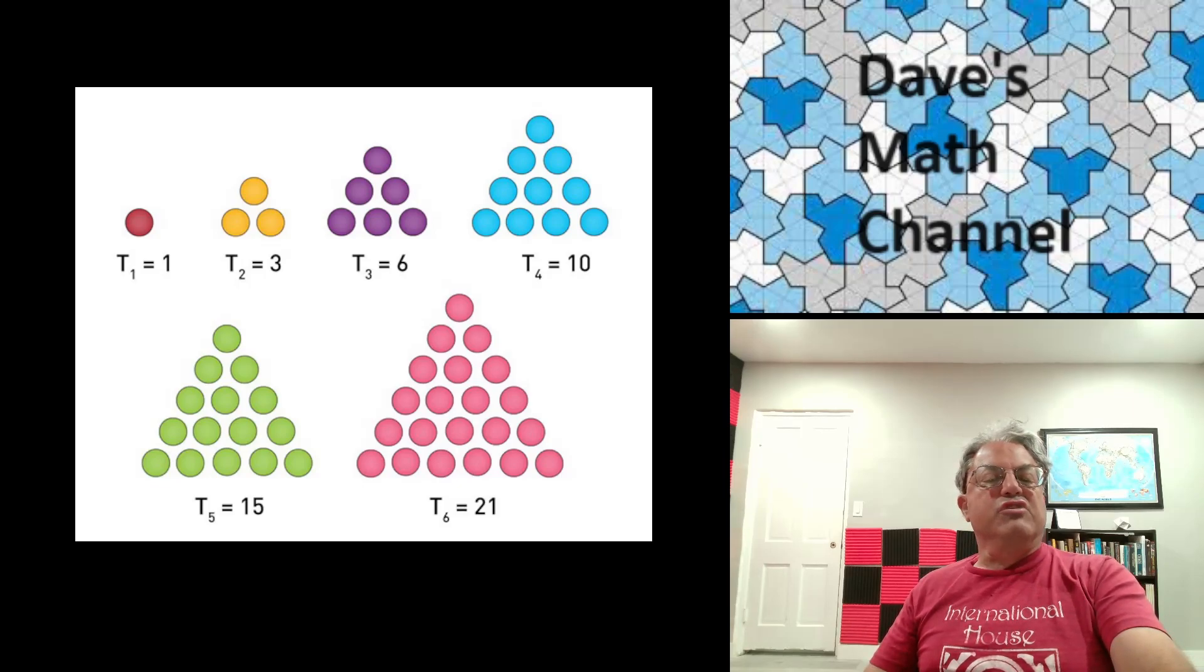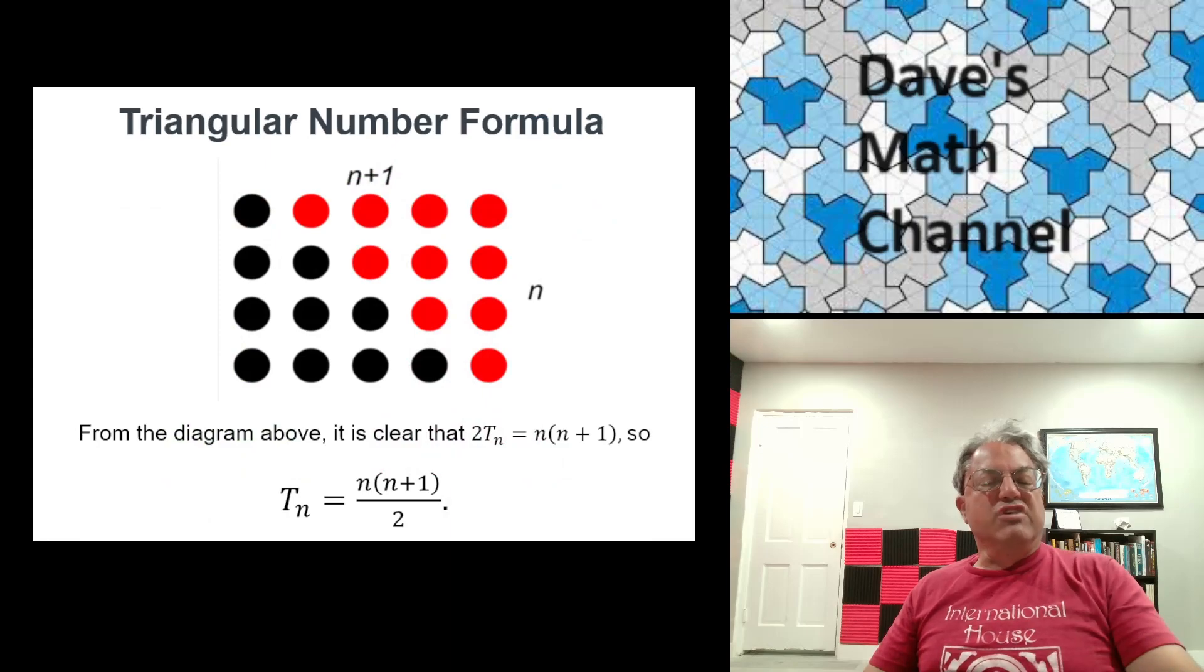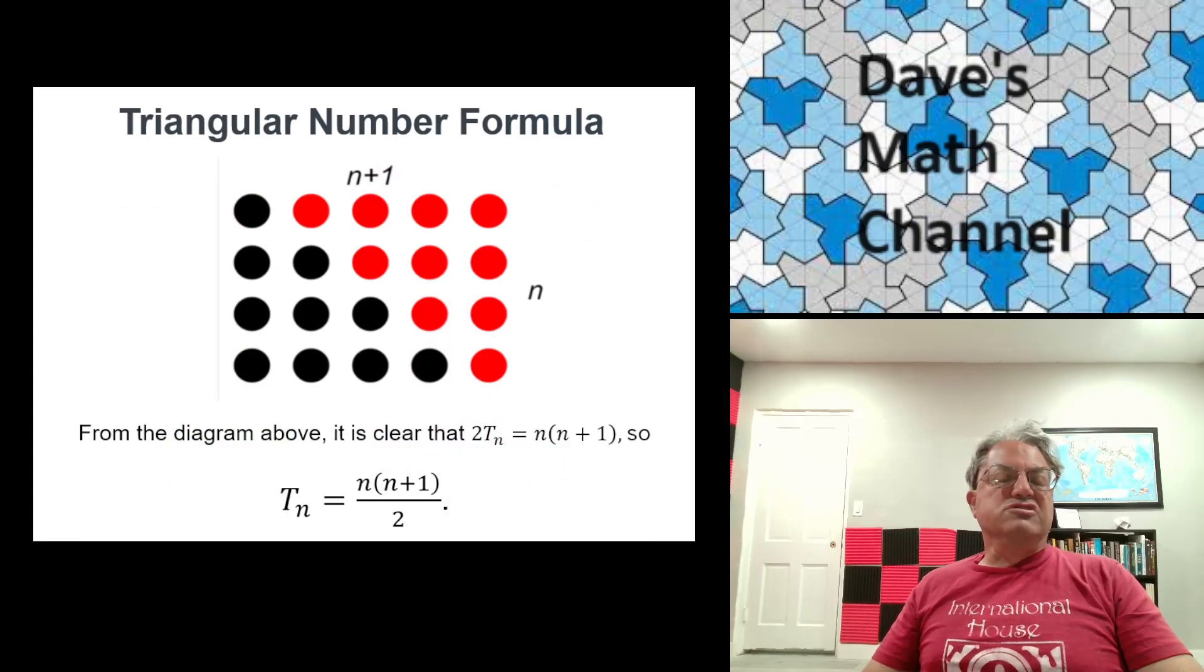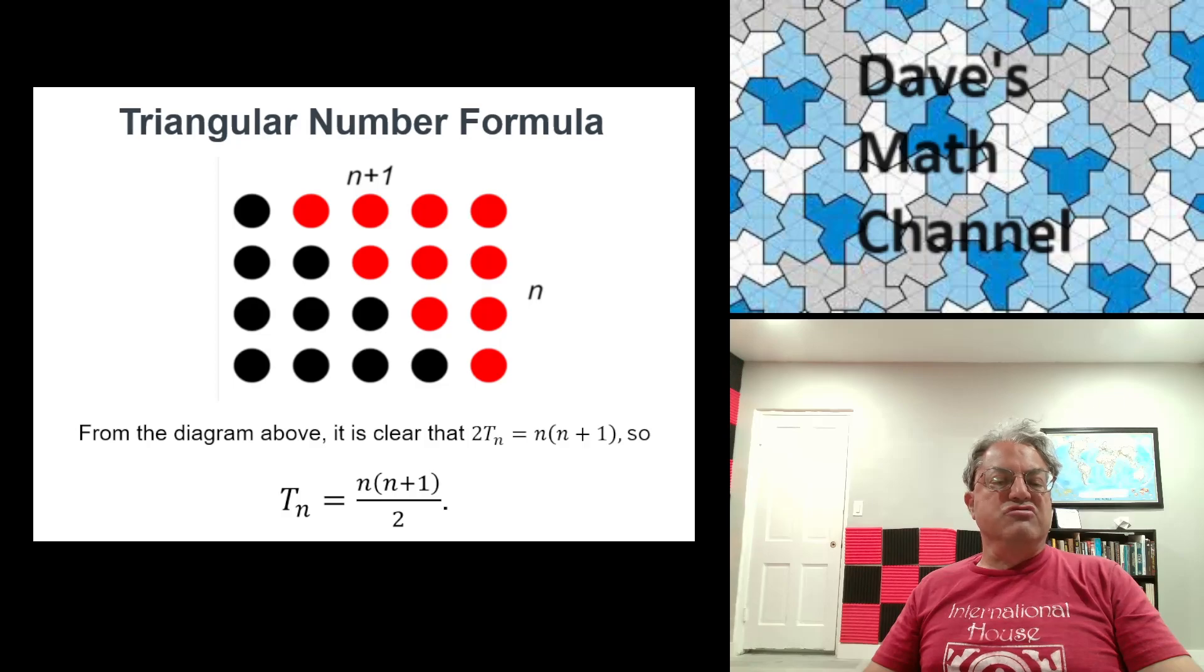Well, there's a nice way to get a formula for tn. This is my favorite derivation. Put two triangles next to each other, rearrange them, turn them into right triangles, and then put them next to each other. When you do that, you get an n by n plus 1 rectangle. So we know that 2tn equals n times n plus 1, which we divide both sides by 2. We get tn equals n times n plus 1 over 2. Voila.